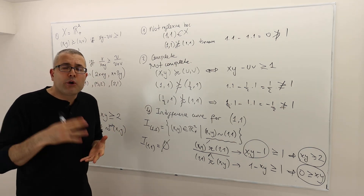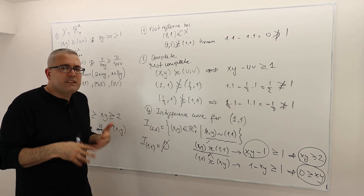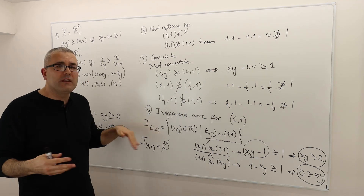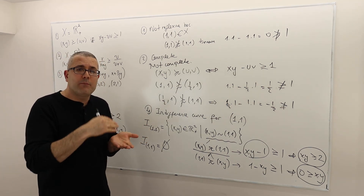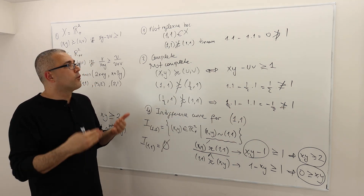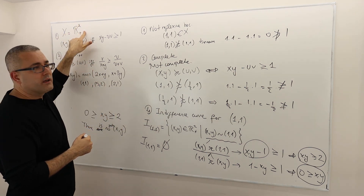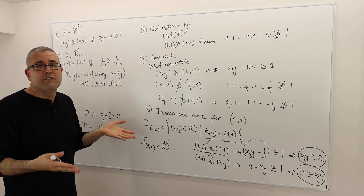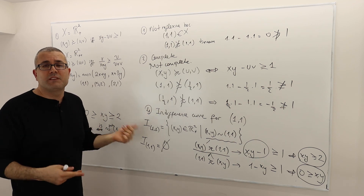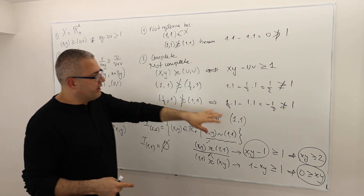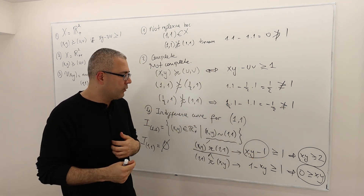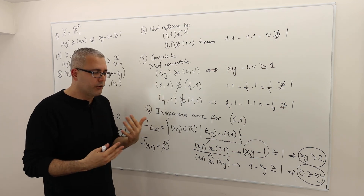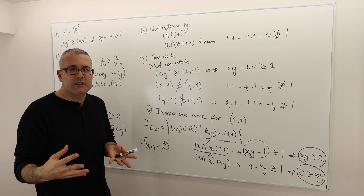You can now probably extend this logic to any point. What is special about (1, 1)? Nothing. So you can actually extend this idea to any point (x, y) and find the indifference curve. In fact, a more challenging question would be: prove that for any (x, y) in R² plus, the indifference curve of (x, y) is an empty set. This is a valid statement. To prove it, you'd need a few more steps — you can't just use (1, 1) specifically — but you generalize this same approach. The method is going to be very similar. Any questions?